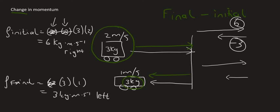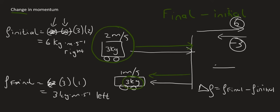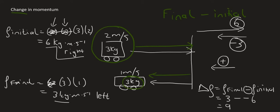If you want to do this the proper way, you can say that the change — shown with the triangle symbol delta — in momentum is always equal to the final momentum minus the initial. When you use this formula, you must choose a direction as positive. Let's choose left as positive. The final momentum is to the left, so that's 3. Then minus the initial, which is 6 kg·m/s to the right. Since we chose left as positive, the initial becomes minus 6. So we get 3 minus negative 6, which equals 9 kg·m/s to the left.